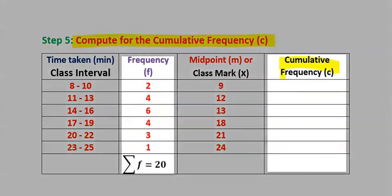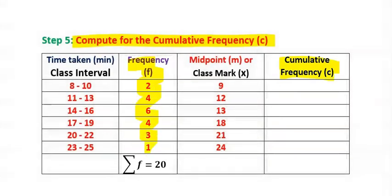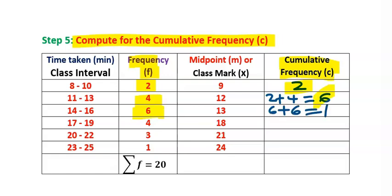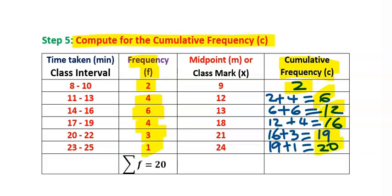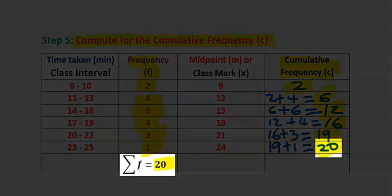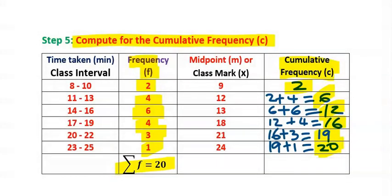Compute for the cumulative frequency using the frequency column. We start with the first one: 2, and we write 2. Next is 2 plus 4, and you get 6. Next, 6 plus 6, and you get 12. Next, 12 plus 4, and you get 16. Next, 16 plus 3, and you get 19. Next, 19 plus 1, and you get 20. The last sum must equal the sum of the frequency; if not, go back and check where you made a mistake.